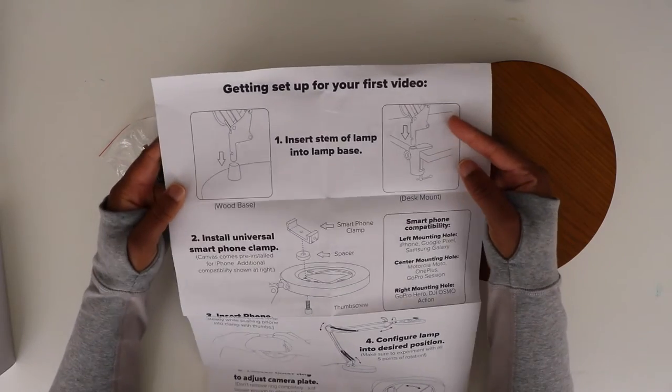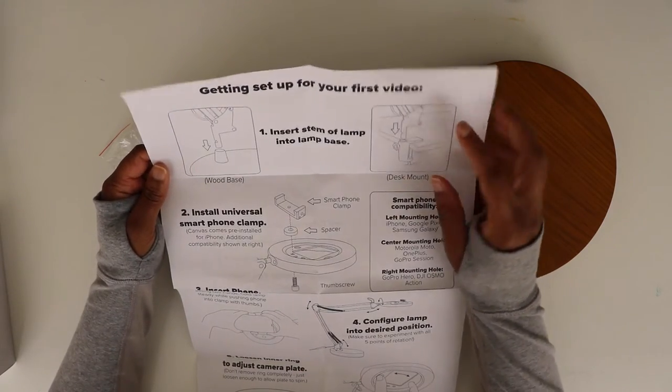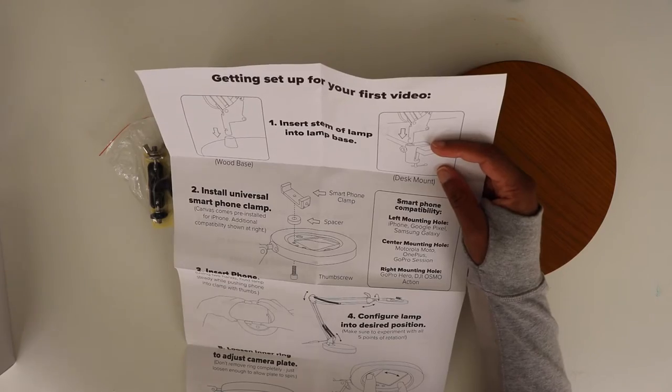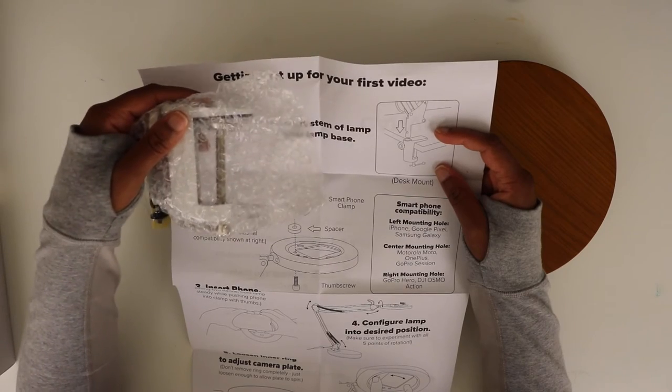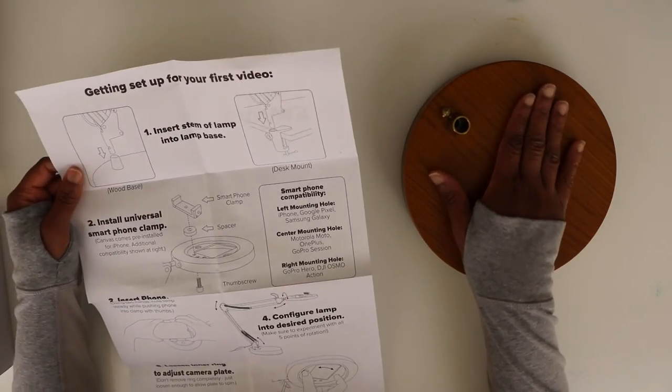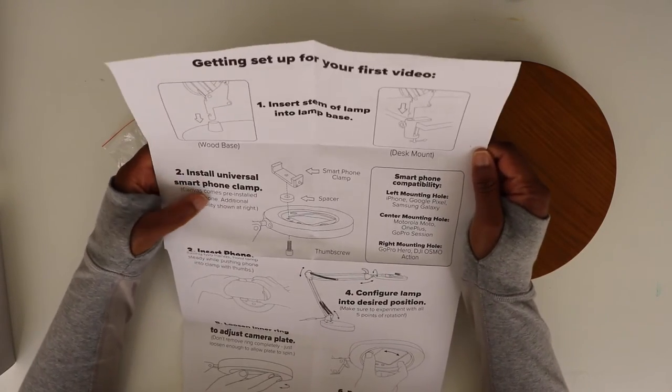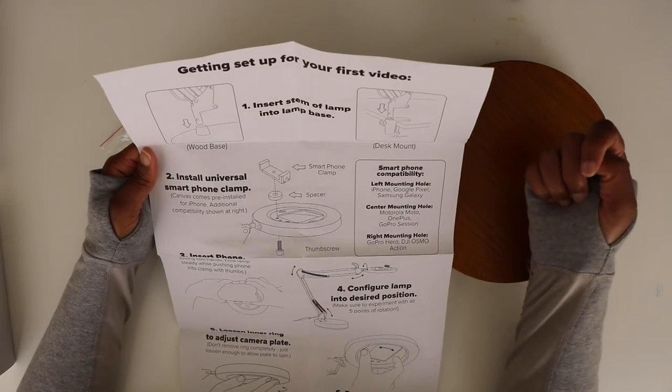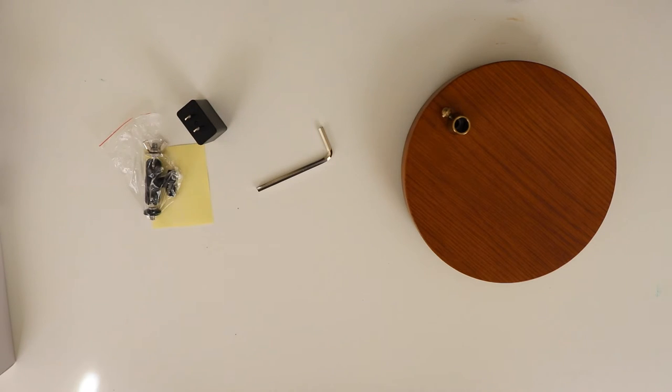So getting set up for your first video, insert stem of lamp into lamp base. And so the clamp here, this is I want to say desk mount C clamp or something D clamp. You can buy this canvas with just the clamp and it's about $50 cheaper. $50 is pretty much you're adding on the base. And then smartphone clamp so that's already installed and then you can insert your phone and you're ready to go, awesome. So let's see if I can get this together.